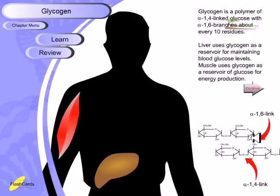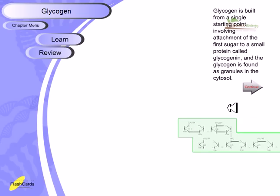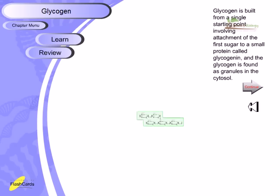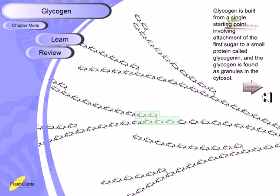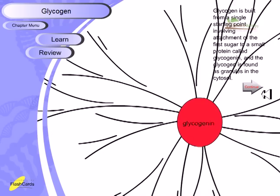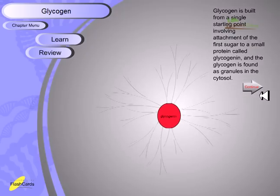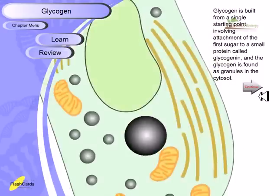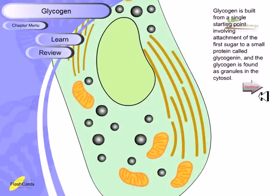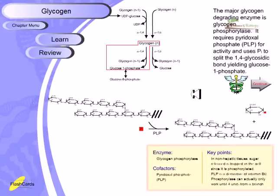The liver uses glycogen as a reservoir for maintaining blood glucose levels. Muscle uses glycogen as a reservoir of glucose for energy production, because muscle needs to produce energy most of the time. Glycogen is built from a single starting point involving attachment of the first sugar to a small protein called glycogenin, and glycogen is found as granules in the cytosol.